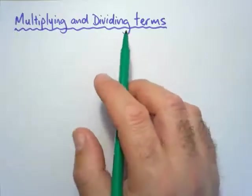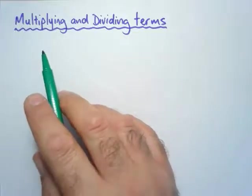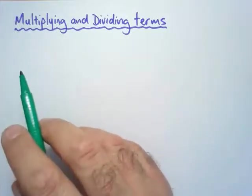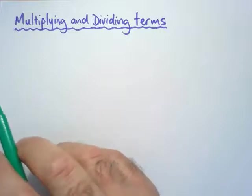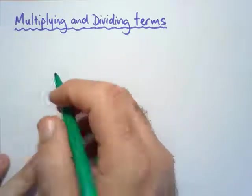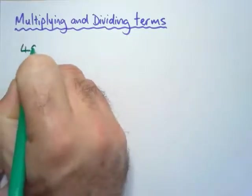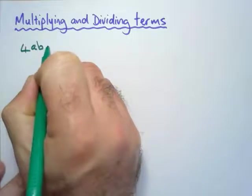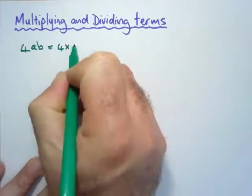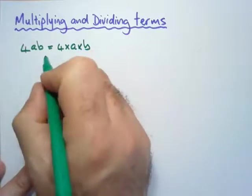Multiplying and Dividing Terms. Unlike adding and subtracting terms where we have to add and subtract like terms, we can multiply and divide any terms with each other. Now remember we said that if I have 4ab it actually means that this is 4 times a times b and the order doesn't matter.